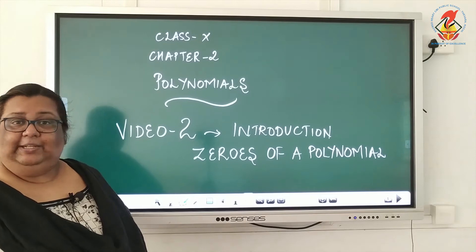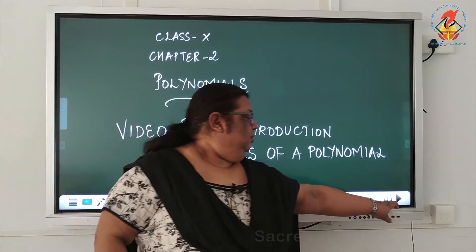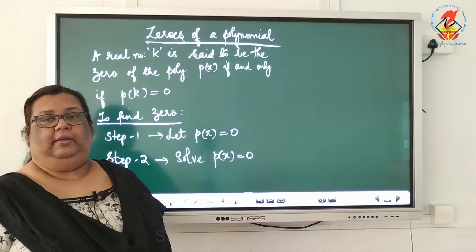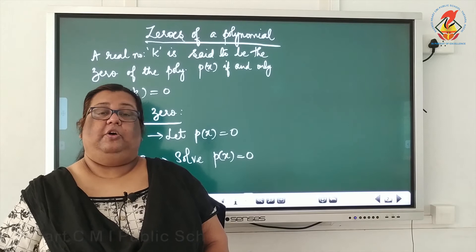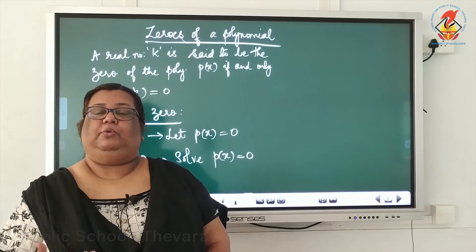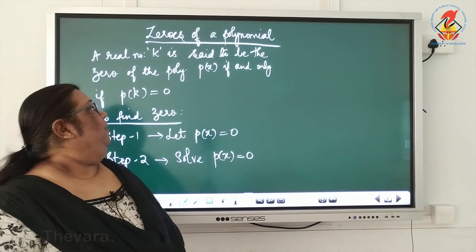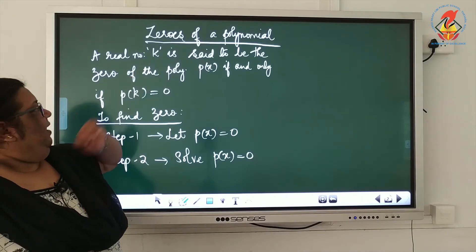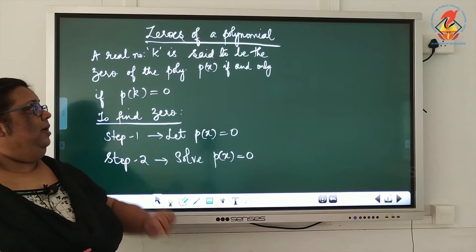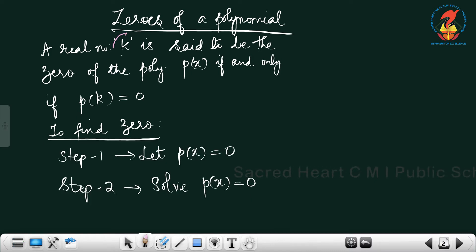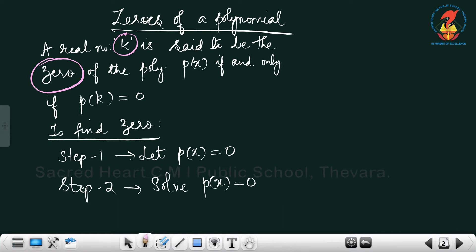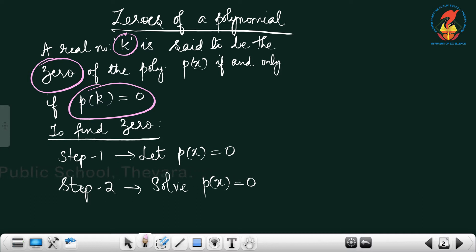Our second video is based on the zeros of a polynomial. What is meant by zero of a polynomial? Do you remember another word for zero? Zero means solution of a polynomial, or we call it a root of the polynomial. A real number k is said to be the zero, or the solution, or the root of the polynomial p(x) if and only if p(k) is equal to zero.